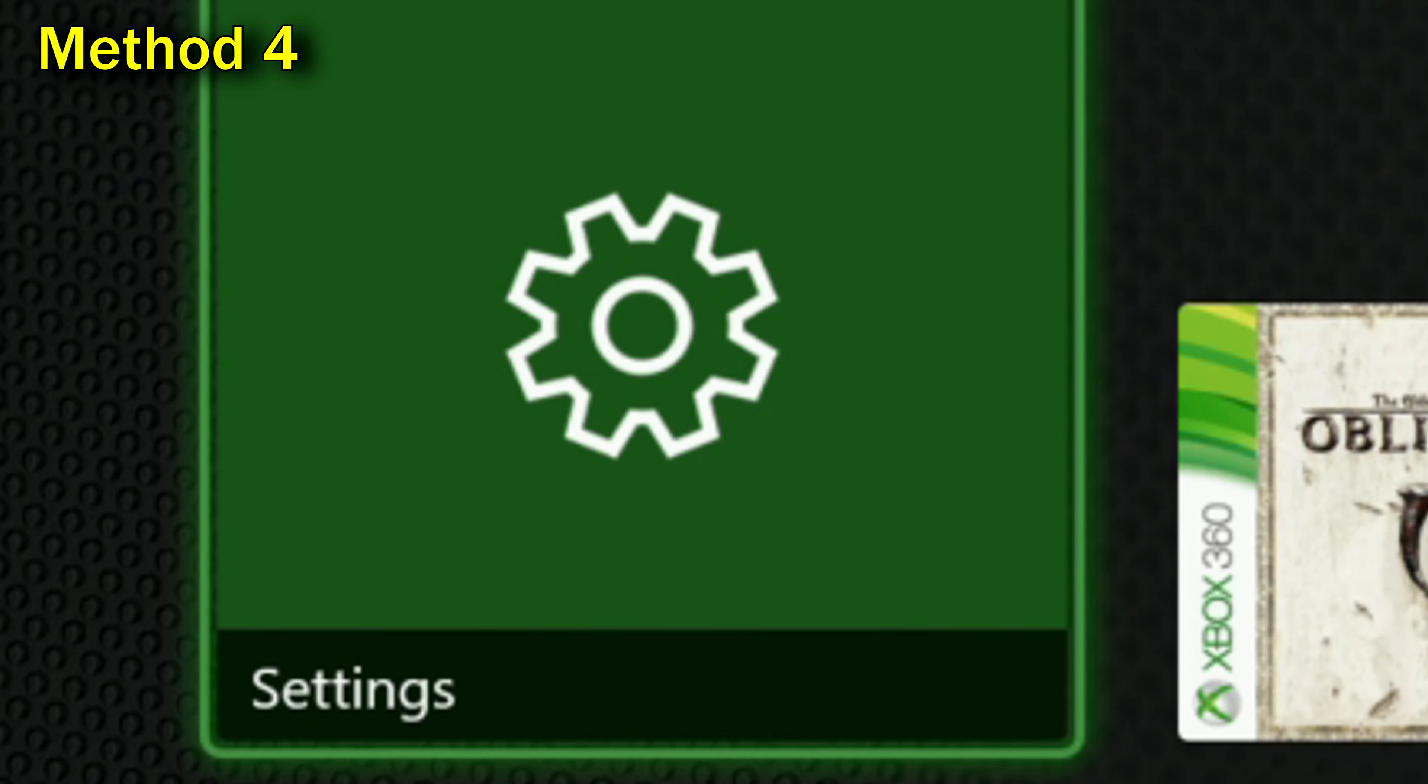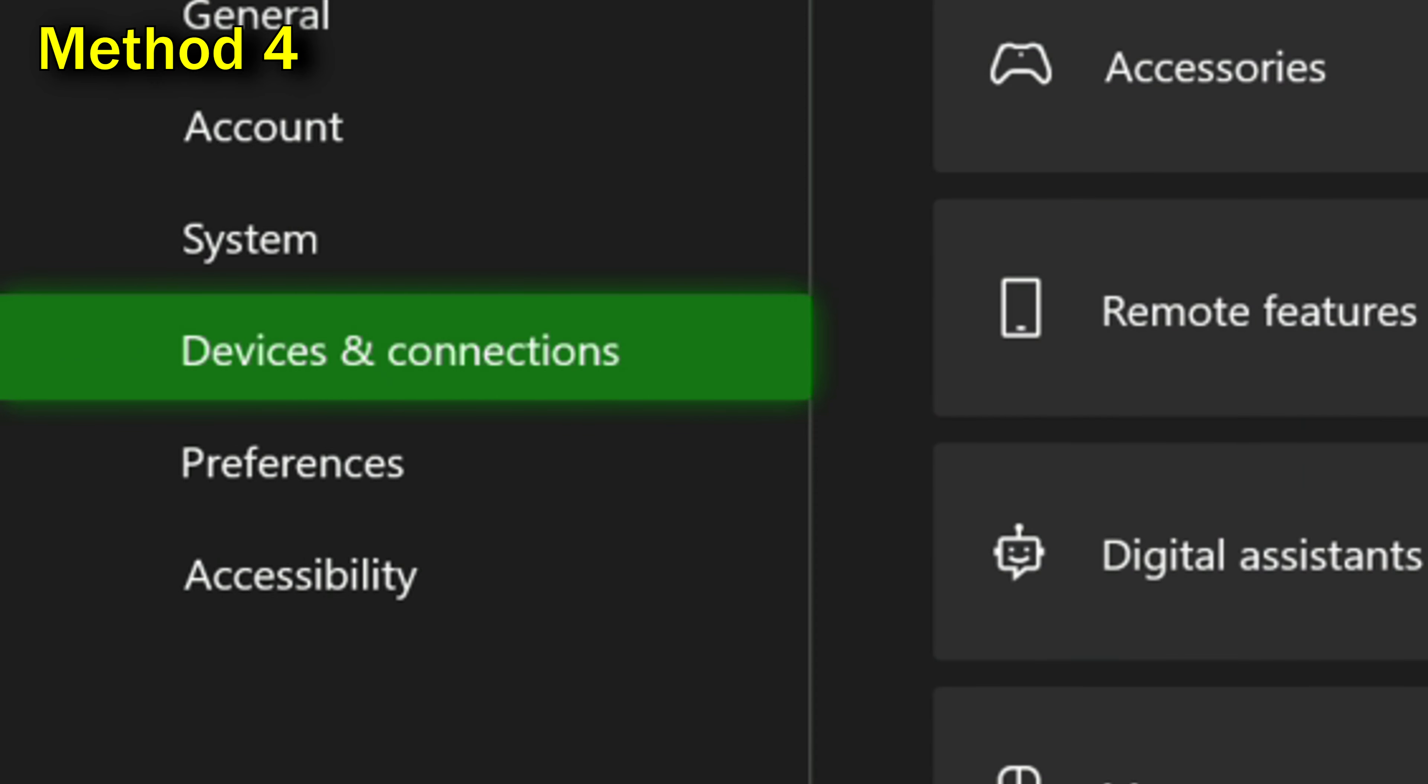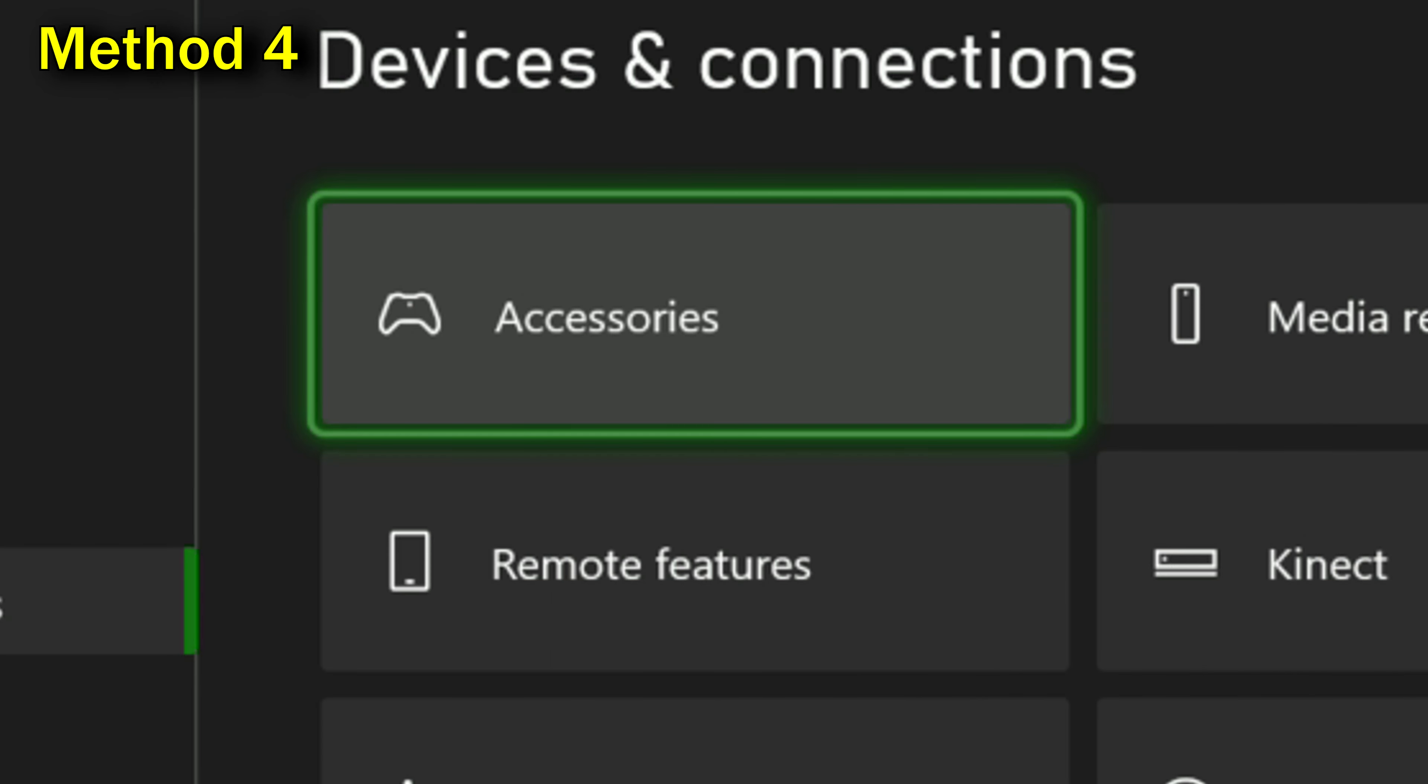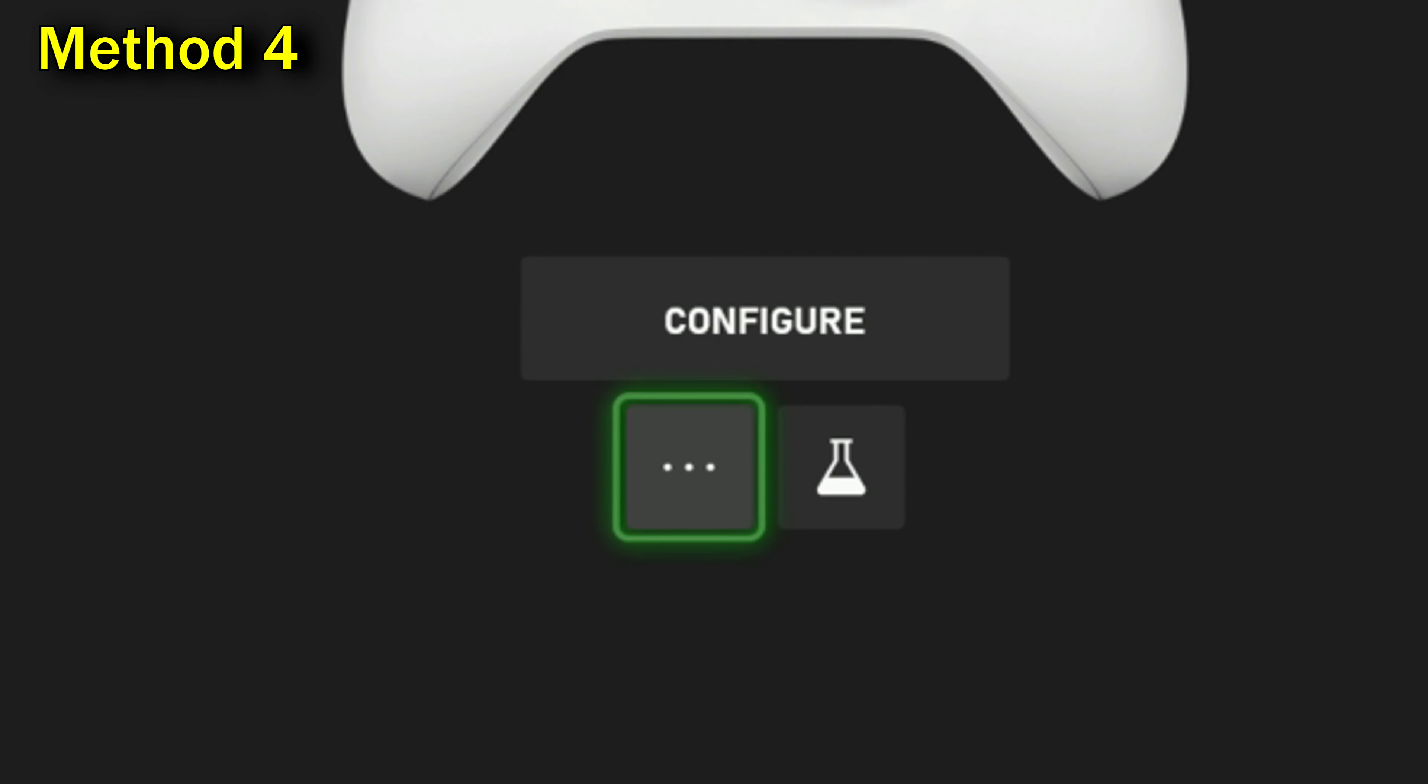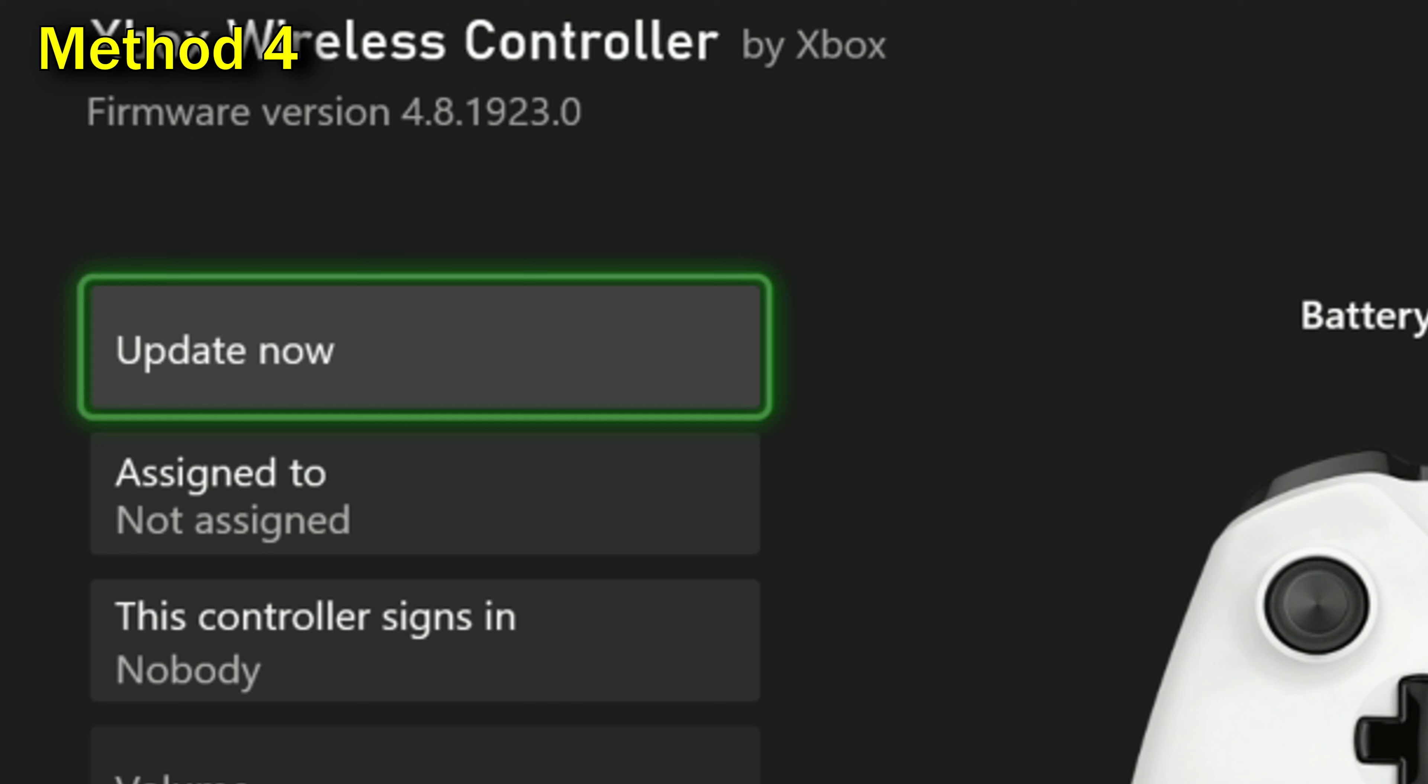To do that on your Xbox dashboard, go to settings, then go to devices and connections, then go to accessories, and then you should see a picture of your controller, and underneath should be three dots. Click those three dots, and then update now, if one is available.